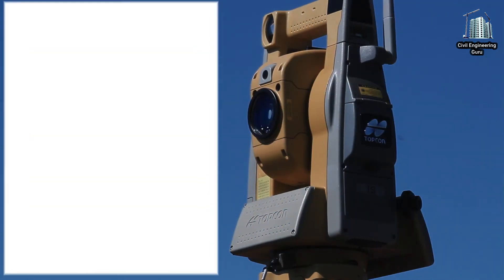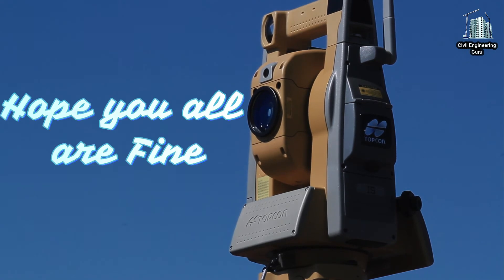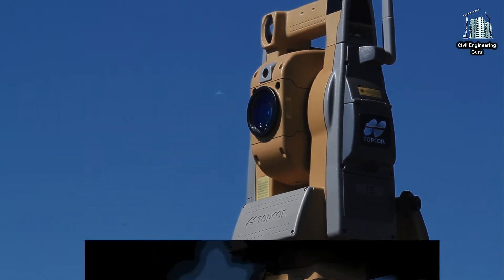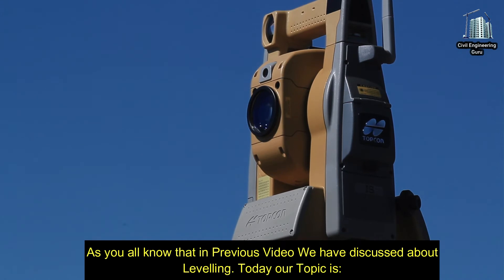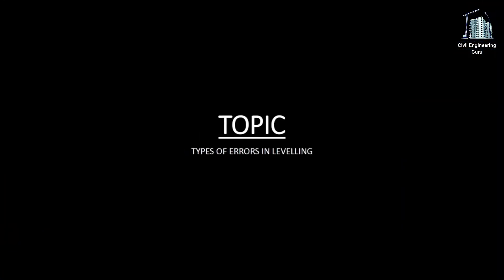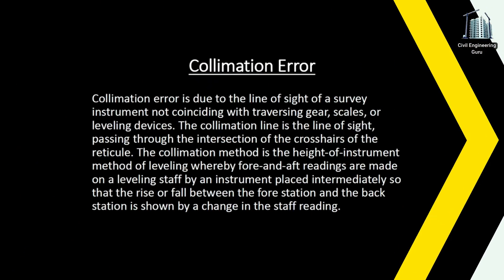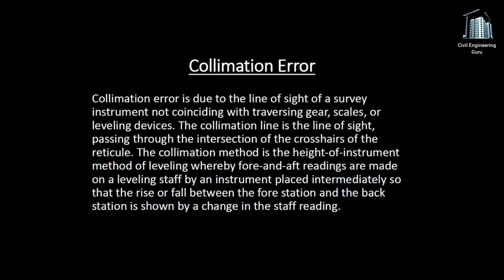Welcome to Civil Engineering Guru. In our previous video we discussed leveling. Today our topic is types of errors in leveling. The main types are: collimation error, error due to curvature and refraction, and instrumental errors.